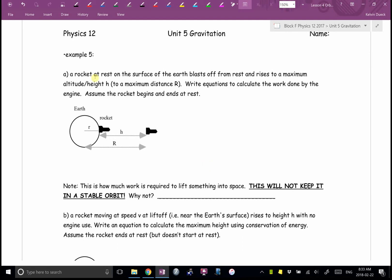A rocket at rest, I would probably underline the word at rest. What's my initial kinetic energy if I'm at rest? Okay. Blasts off from rest and rises to a maximum altitude or height. If I give you the altitude, make sure you add the radius of the planet. If I give you the height, make sure you add the radius of the planet. If I give you the radius, you don't need to worry about that, to a maximum distance, big R. Write equations to calculate the work done by the engine.